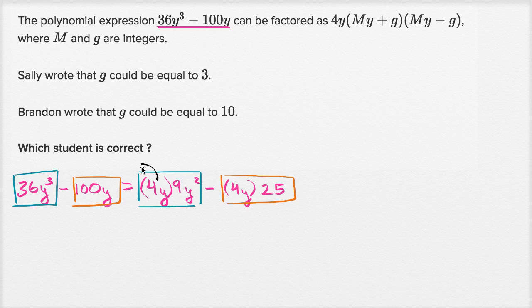So we can factor out, you could think of it as undistributing the 4y. So this is going to be equal to 4y. And what is left over? Well, if you factor out a 4y of this first term, we're going to have a 9y², and then minus 25. And when we write it like this, we see what we have in parentheses here. This is a difference of squares.